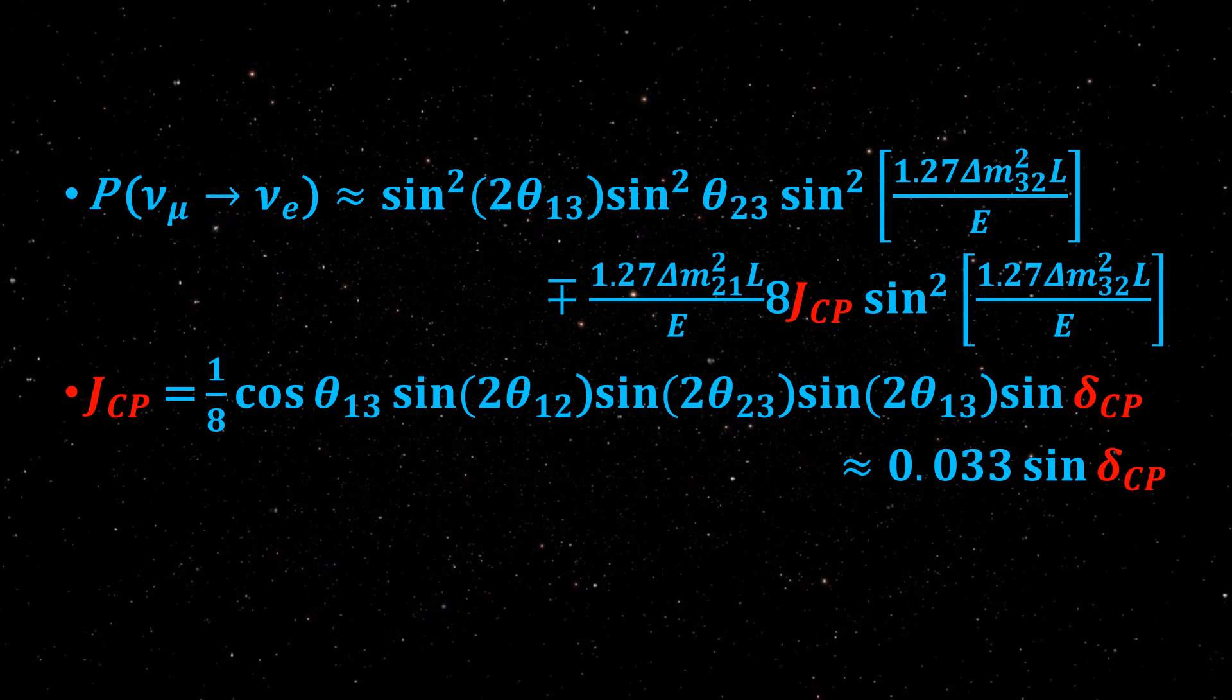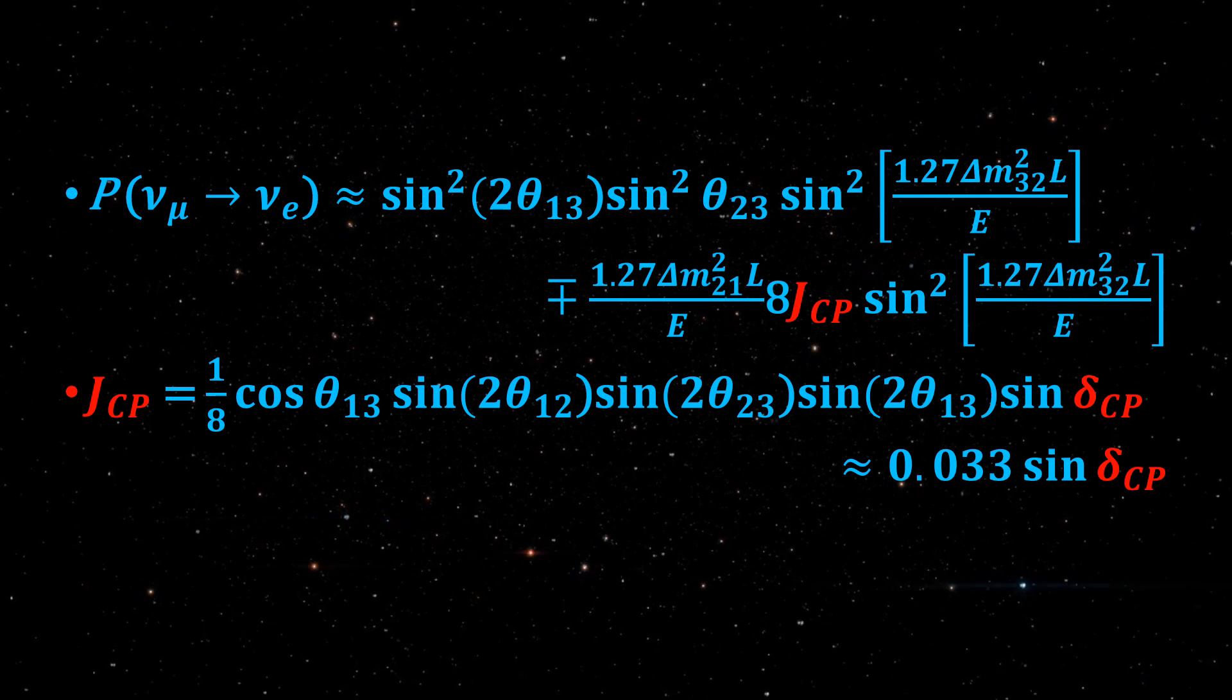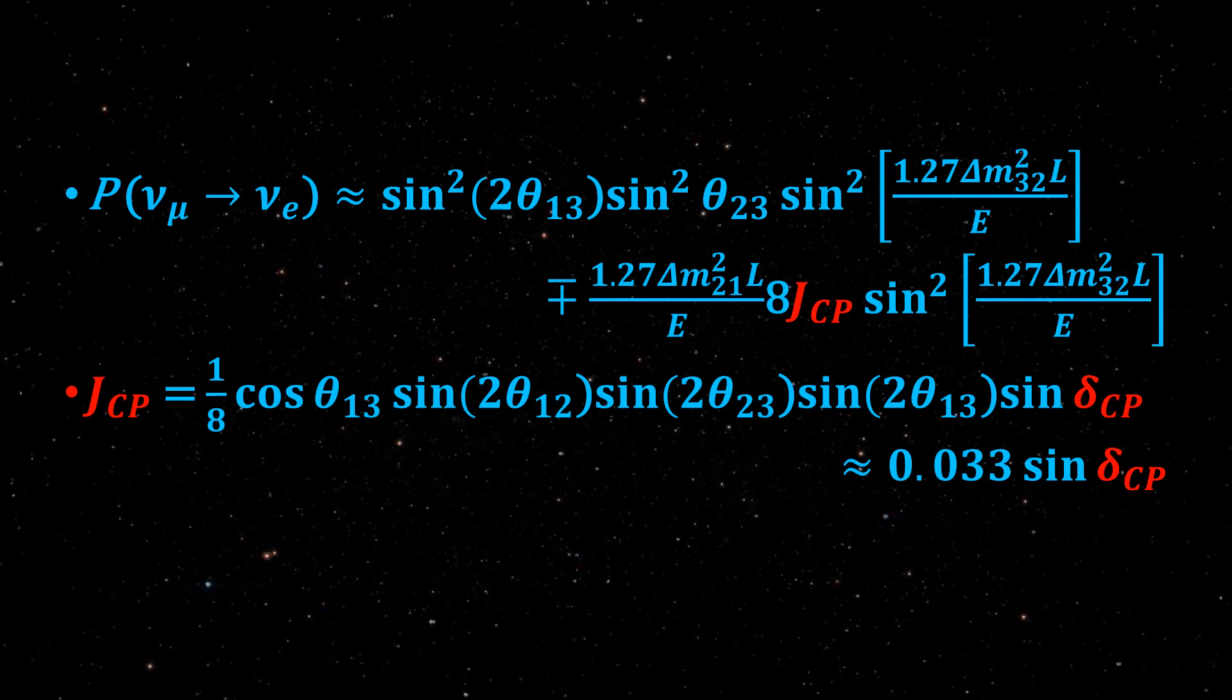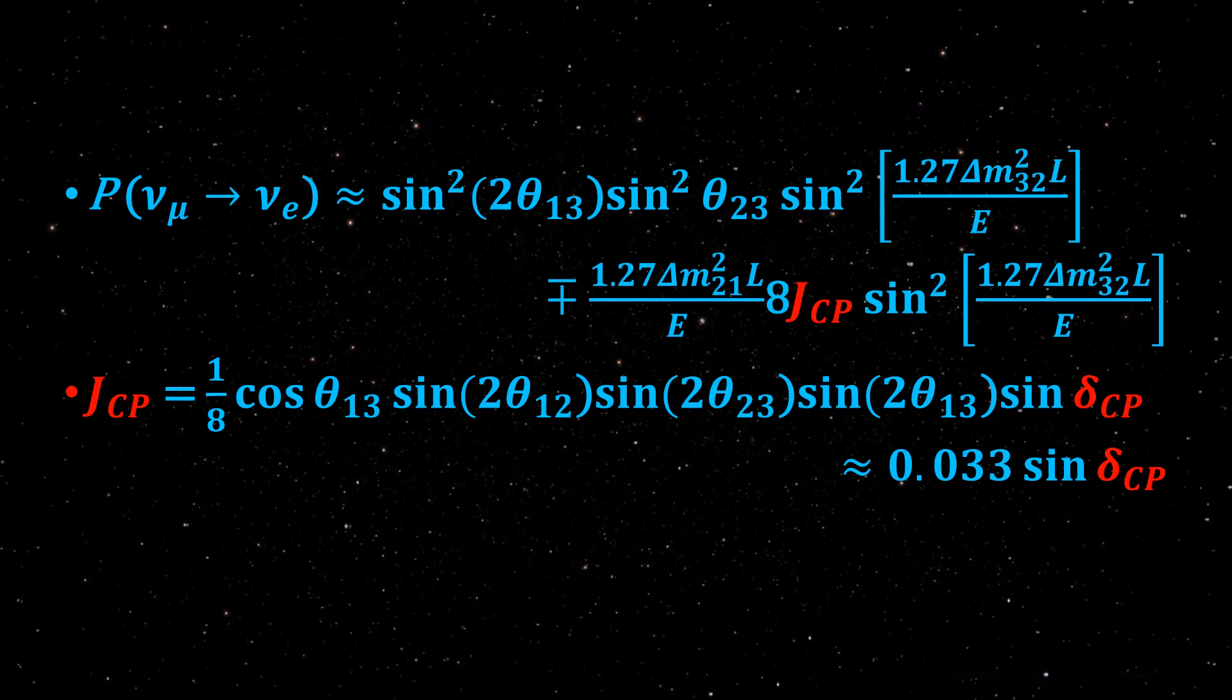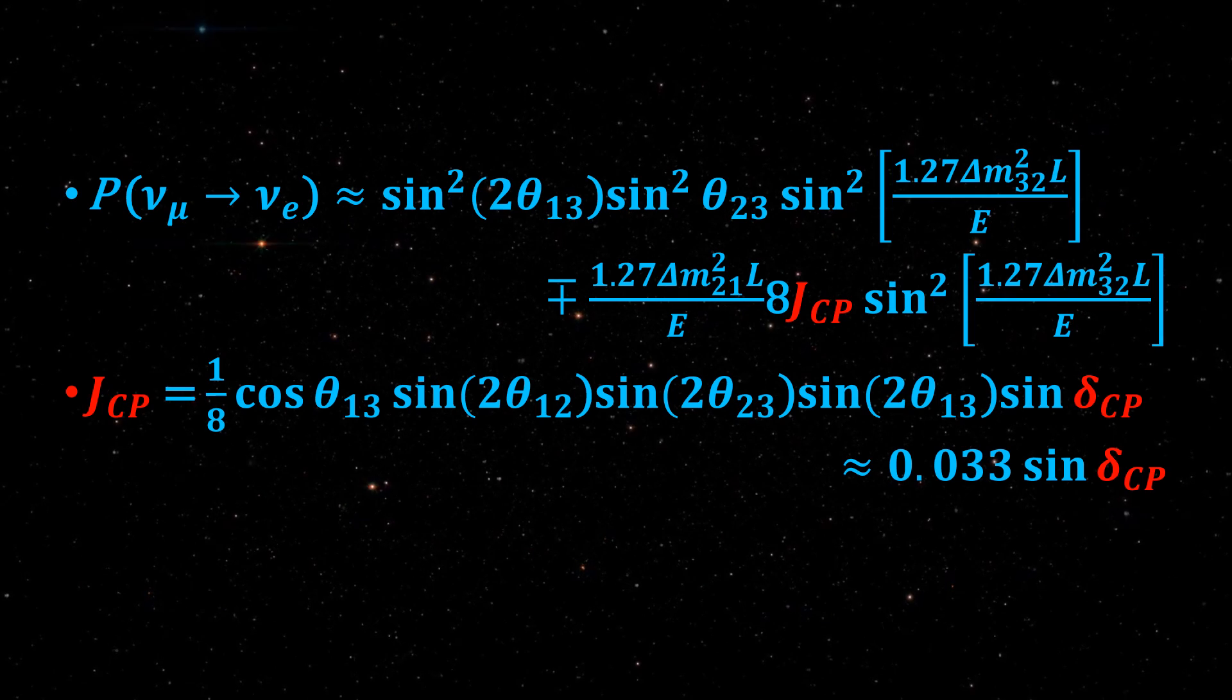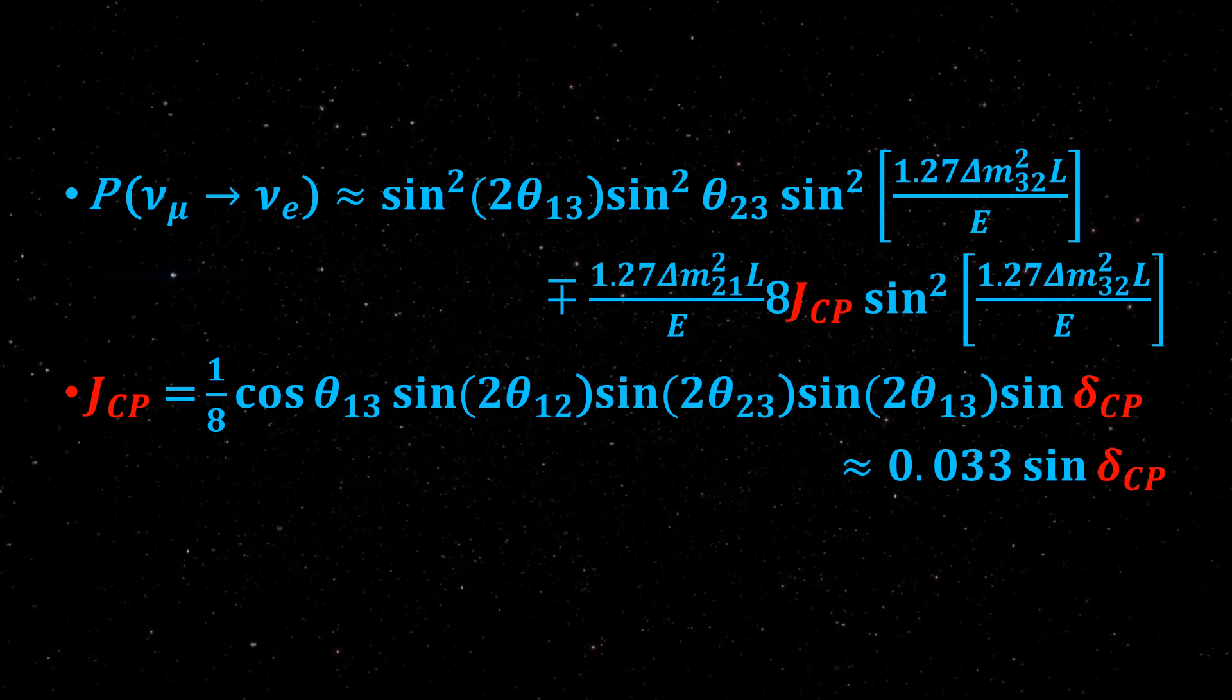This mixing is described by a unitary matrix called the Pontecorvo-Maki-Nakagawa-Sakata matrix, which can be parameterized by three mixing angles θ_12, θ_13 and θ_23, and complex phases. Of these phases, neutrino oscillations are sensitive to δ_CP.